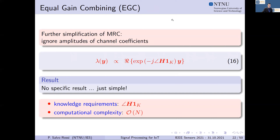A further simplification is equal gain combining, obtained by ignoring the amplitudes of the channel coefficients, giving equation 16. This has no specific optimality results, has similar knowledge requirements but is slightly simpler since we only need the phases of the channel rather than amplitudes, and the computational complexity is basically the same.